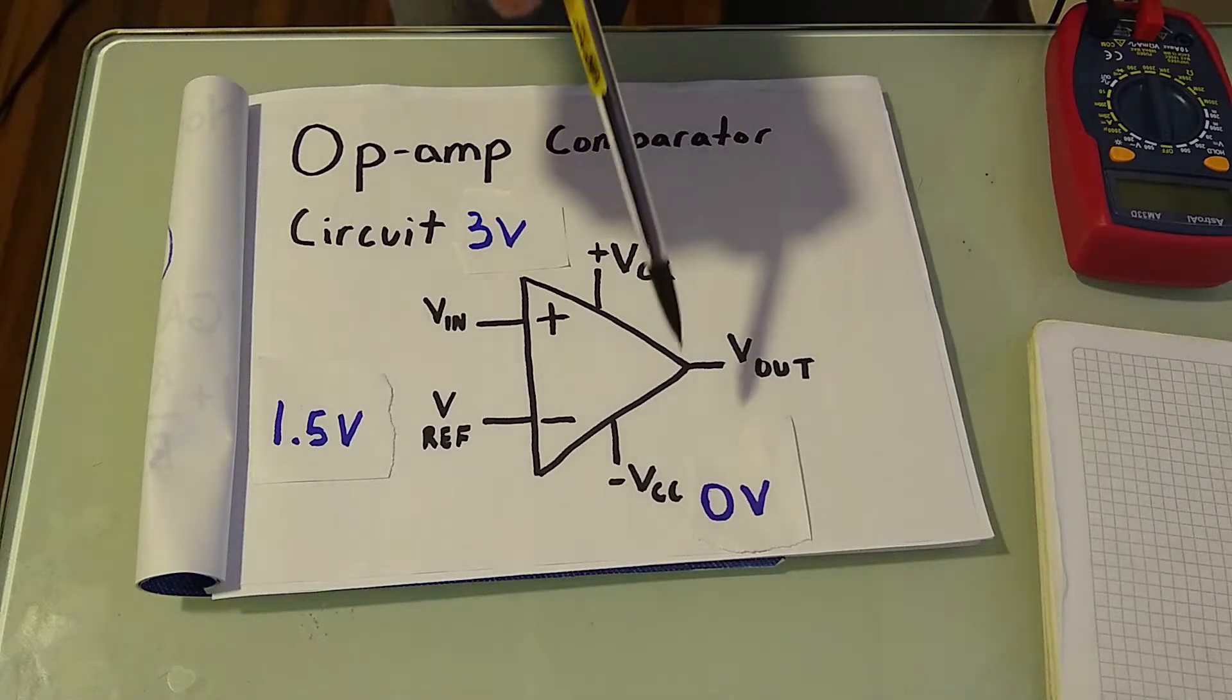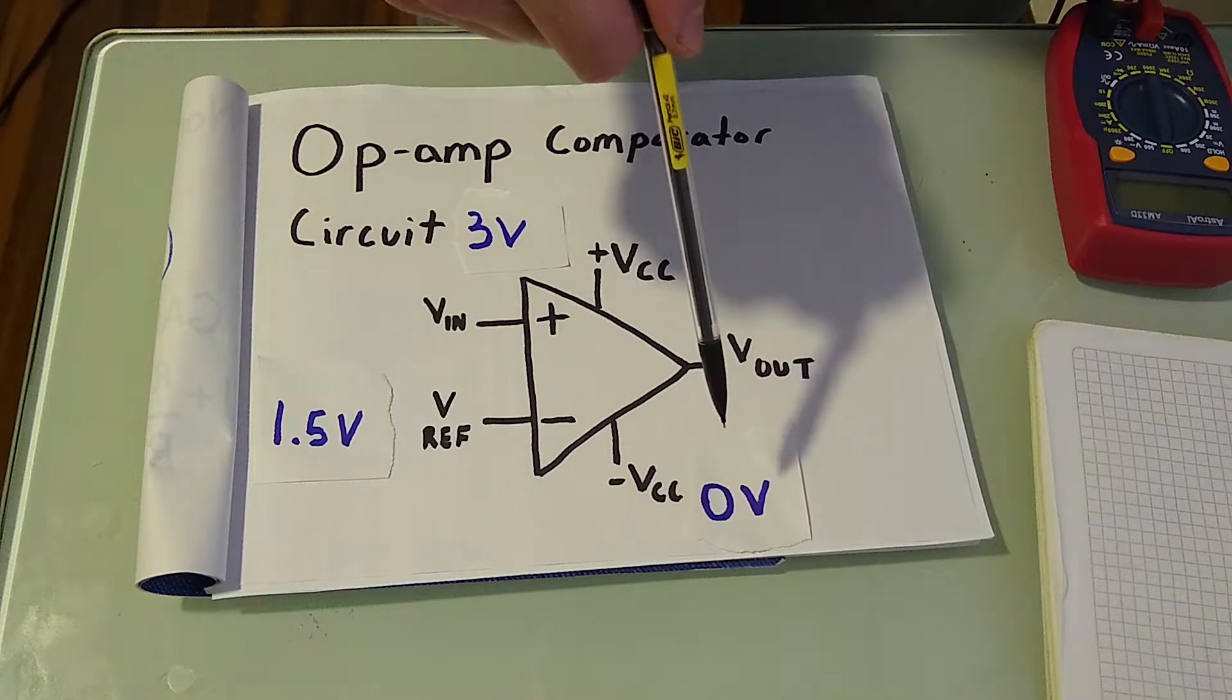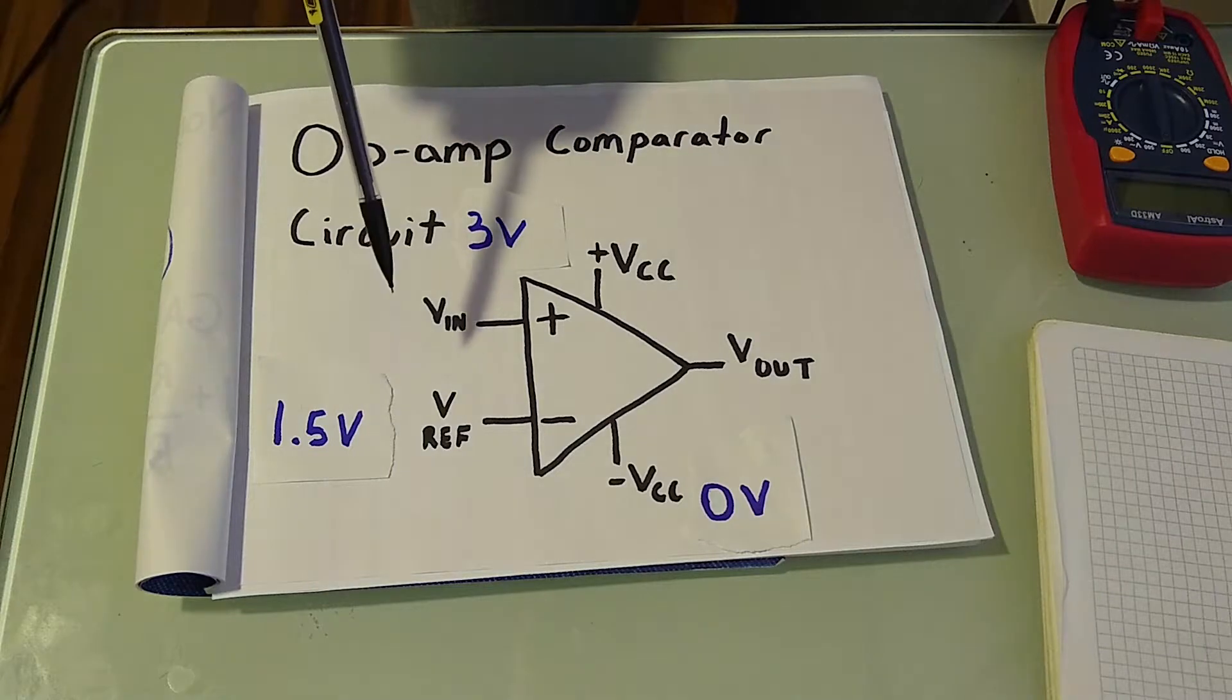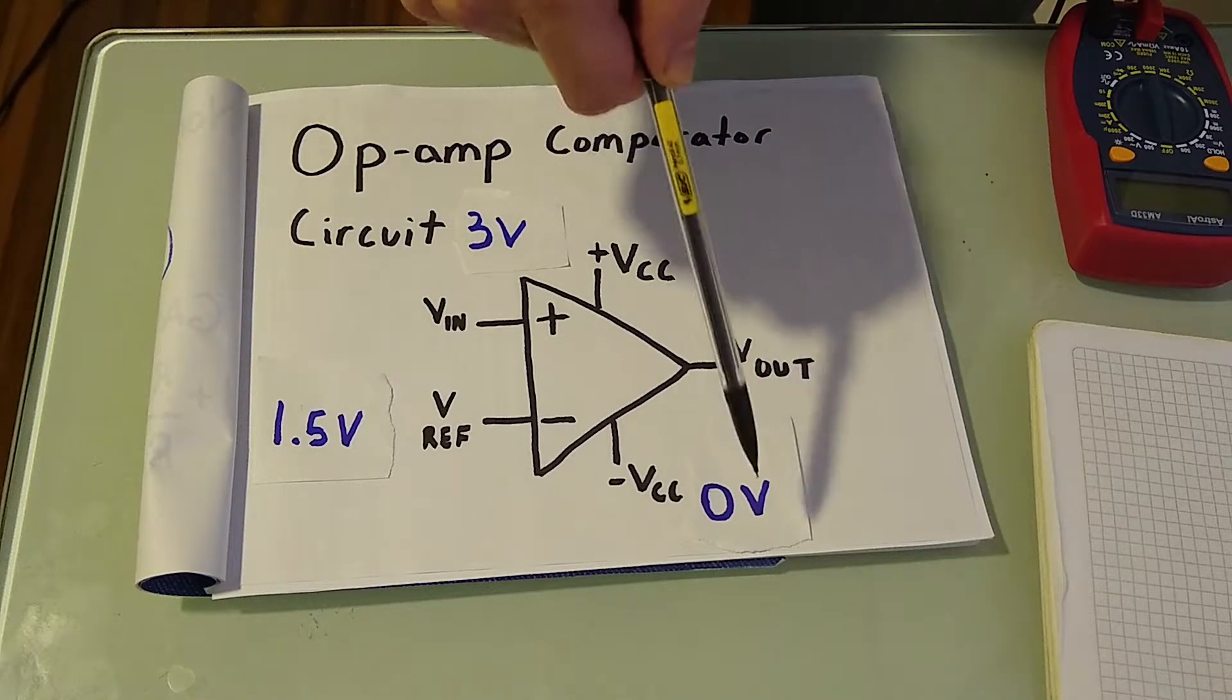Say for instance the VCC negative here was negative 5 volts, and we had an input of 1 volt. Our output would be negative 5 volts.